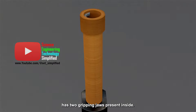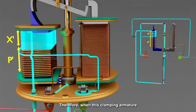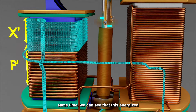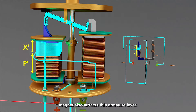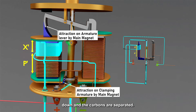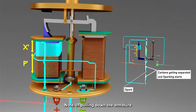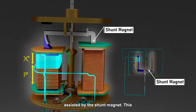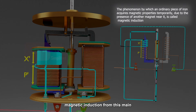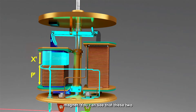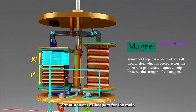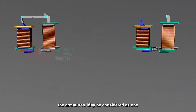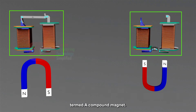Note that we will call a certain length of wire as X', and the rest will be called P'. Upon passage of current, the main magnet is energized and attracts the clamping armature. This clamping armature has two gripping jaws present inside. Therefore, when this clamping armature swings towards the magnet, these gripping jaws grip the rod tightly. At the same time, this energized magnet also attracts the armature lever, pulling it down and separating the carbons. In pulling down the armature lever, the main magnet is assisted by the shunt magnet, which is magnetized by magnetic induction from the main magnet. These two armatures act as keepers for the main magnet and shunt magnet, and both magnets with either one of the armatures may be considered as one horseshoe magnet, also termed a compound magnet.